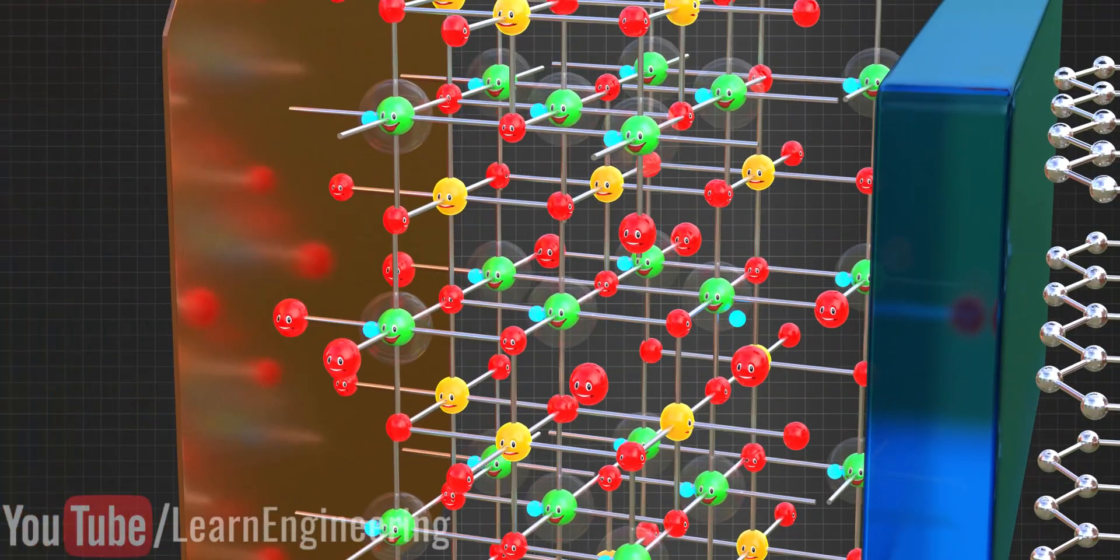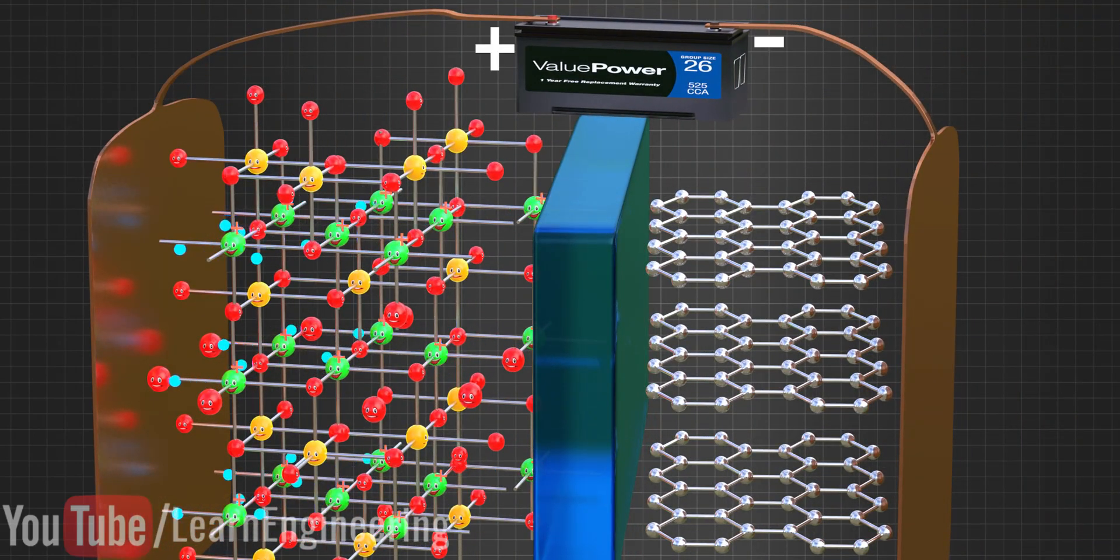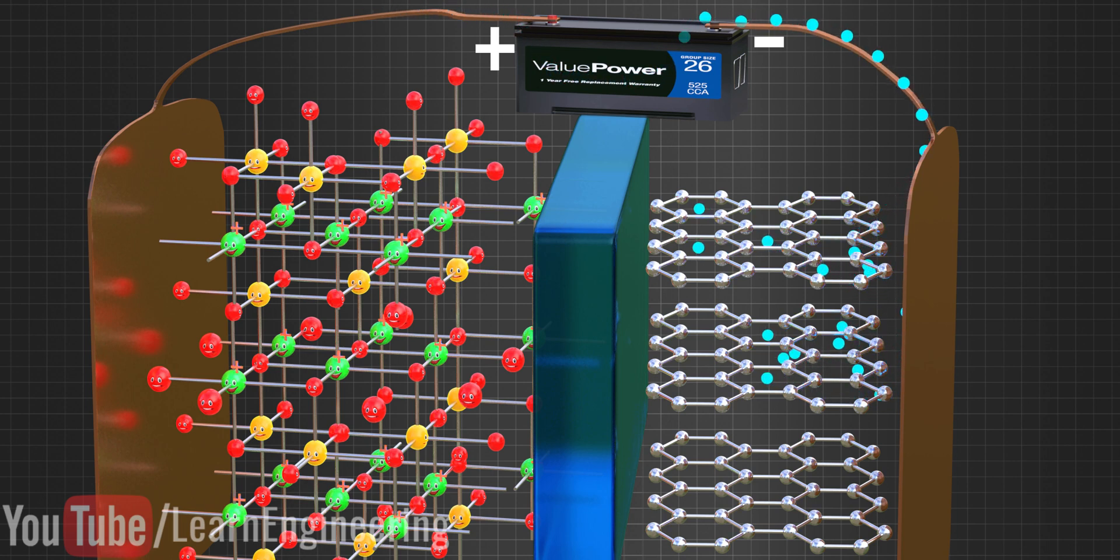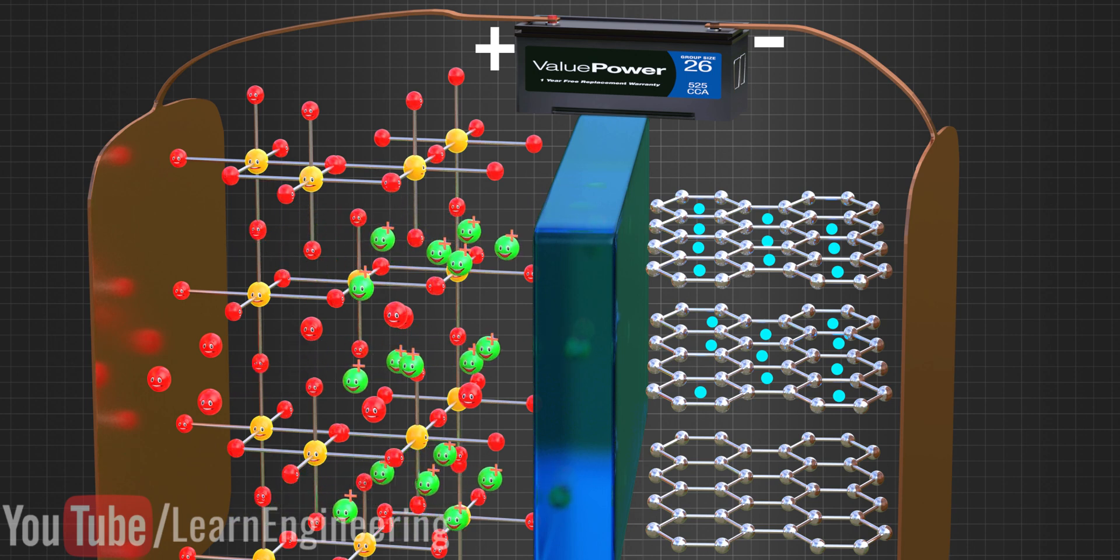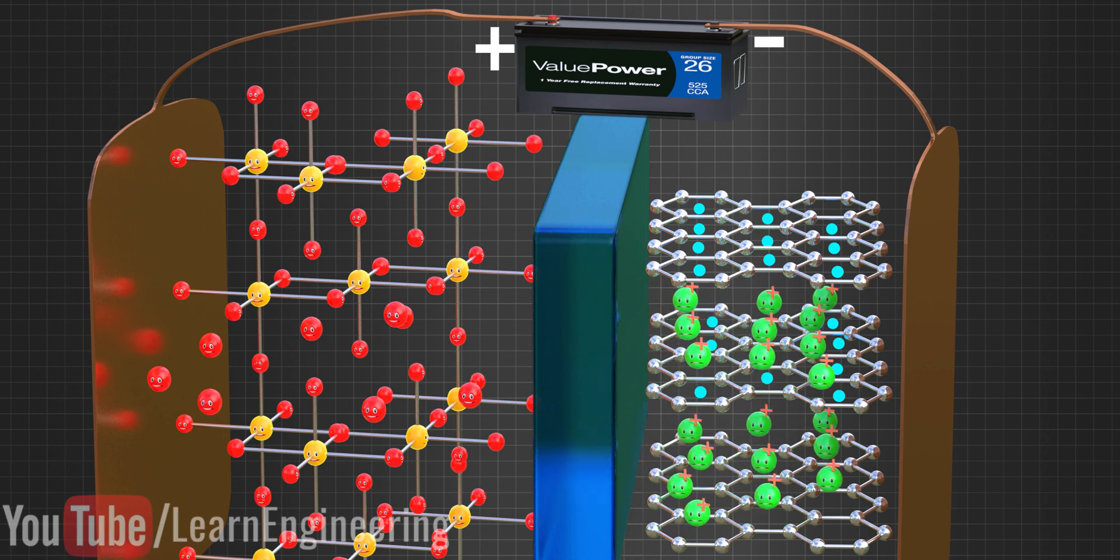Let's use an external power source. The positive side of the power source attracts the electrons. We use an electrolyte too, which blocks any electron flow through it. So, instead, they flow through the external circuit and get trapped between the graphite layers. Similarly, the negative side of the power source attracts the lithium ions, and they also get trapped in the graphite layers. Eventually, the lithium ions are stored with a higher electrochemical potential.